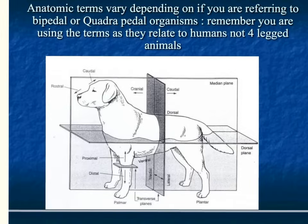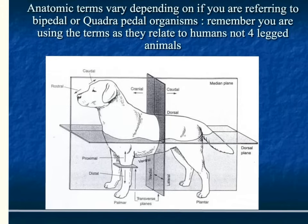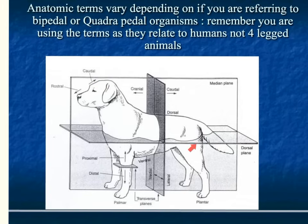Anatomical terms can vary depending on whether you're dealing with a bipedal or a quadrupedal organism. In an anatomy class you will use the previous directional terms for humans, but in a biology class you would use a different diagram relating to body planes and directional terms for quadrupeds. Most notably, the anterior and posterior of a dog differ from that of a human. On a human, anterior equals ventral and posterior equals dorsal, but on a dog or quadruped, anterior is towards the head and posterior is towards the tail.